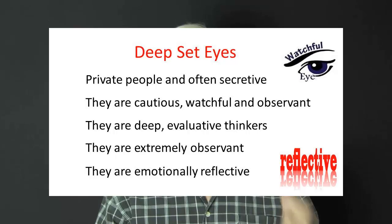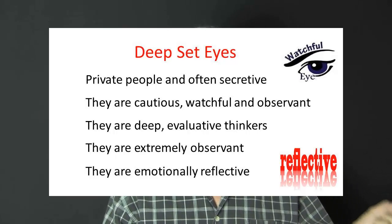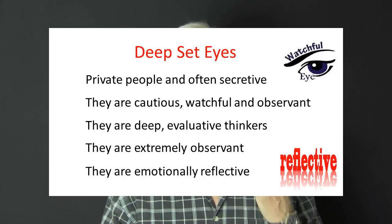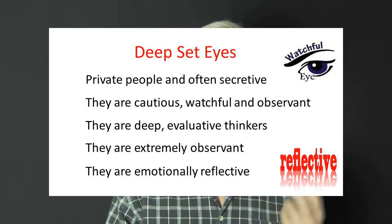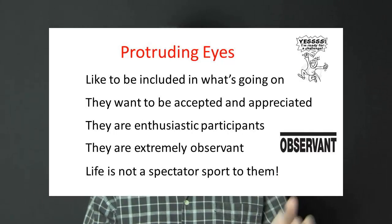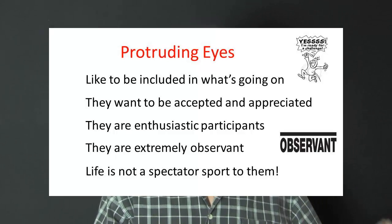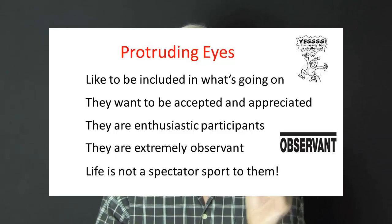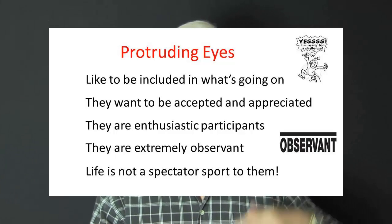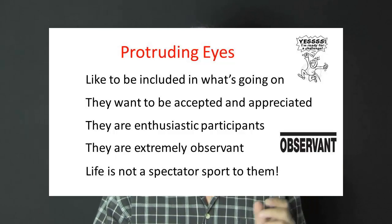Now we'll look at deep-set eyes and protruding eyes. People with deep-set eyes are private people with a tendency to be secretive. They are cautious, watchful, and observant. They are also deep thinkers and evaluate everything — in fact, they are extremely observant and emotionally reflective. People with protruding eyes are very interested and like to be included in everything that's going on. They are not concerned with running the show but they definitely want to be included. They want to be accepted and appreciated. They are enthusiastic people who thoroughly enjoy participating — life is not a spectator sport to them.